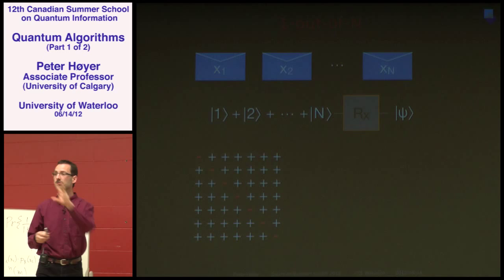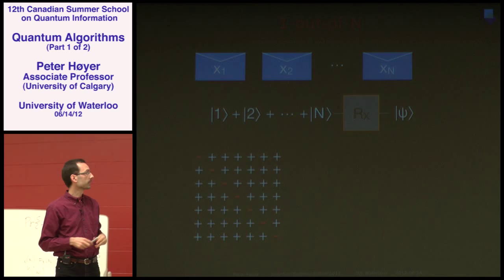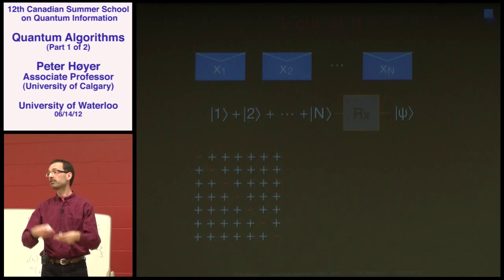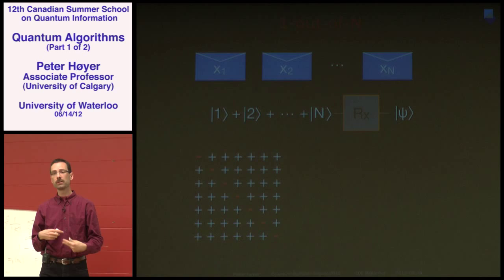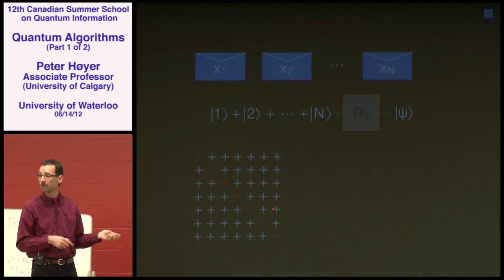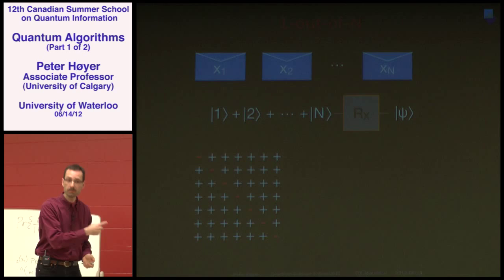We can't just apply the ideal matrix afterwards since it's not unitary. A natural approach is to find the best unitary — the one closest to this non-unitary matrix — and apply that instead. Regardless of which norm you choose, the closest unitary to this matrix has a specific form: you make the minus entries bigger in magnitude and the plus entries smaller, so their sum is zero, yielding a valid unitary.